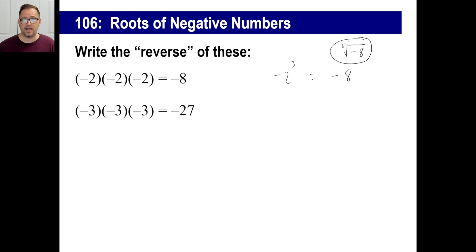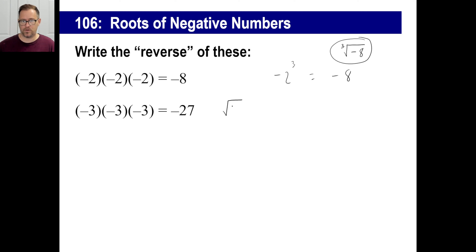Remember how an odd number of negative factors gives you a negative answer? Same thing here. The cube root of negative 27 is negative 3. So negative 3 times negative 3 times negative 3 is negative 27, and that's how you write it.